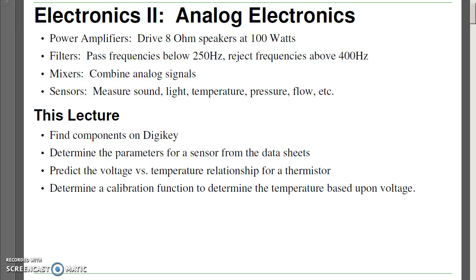Filters, how to build a subwoofer that passes frequencies below 250 hertz and rejects frequencies above 400 hertz. A mixer, you can combine analog signals, so if you ever wanted to know what Katy Perry sounds like when mixed with Enigma to DeVita, you can do it.